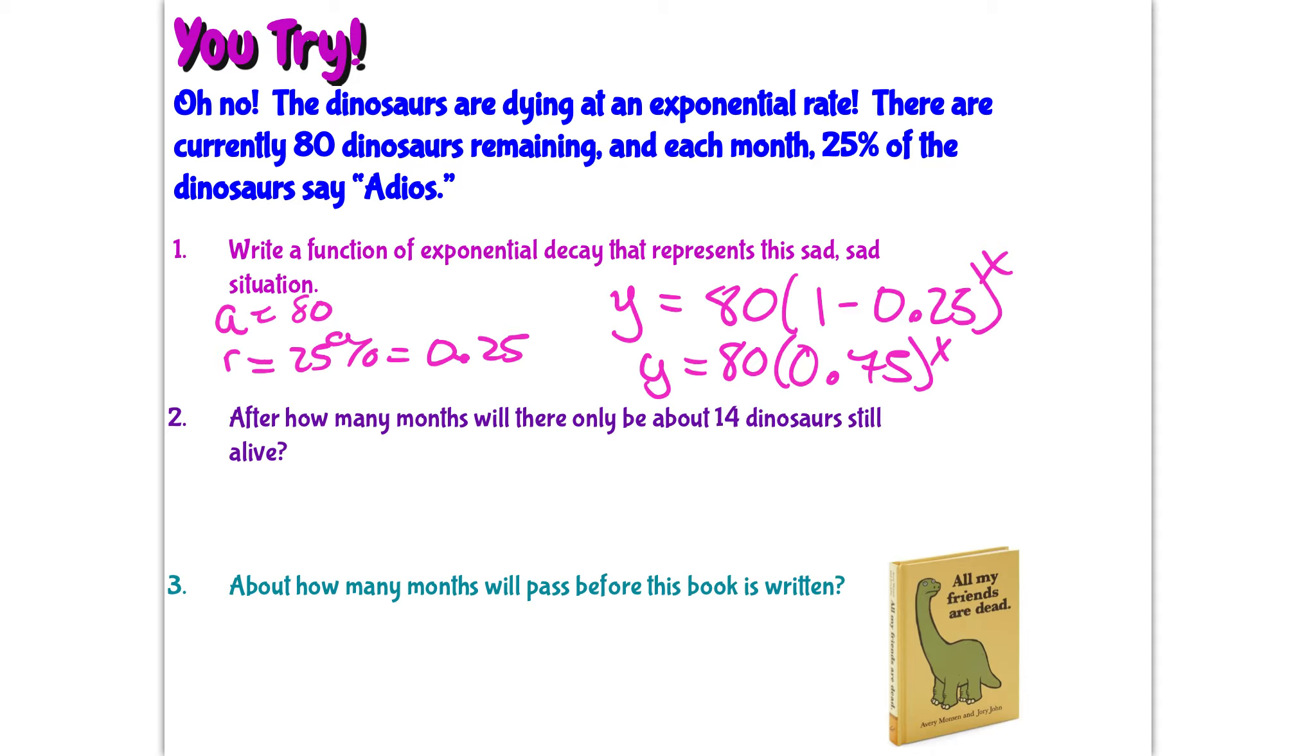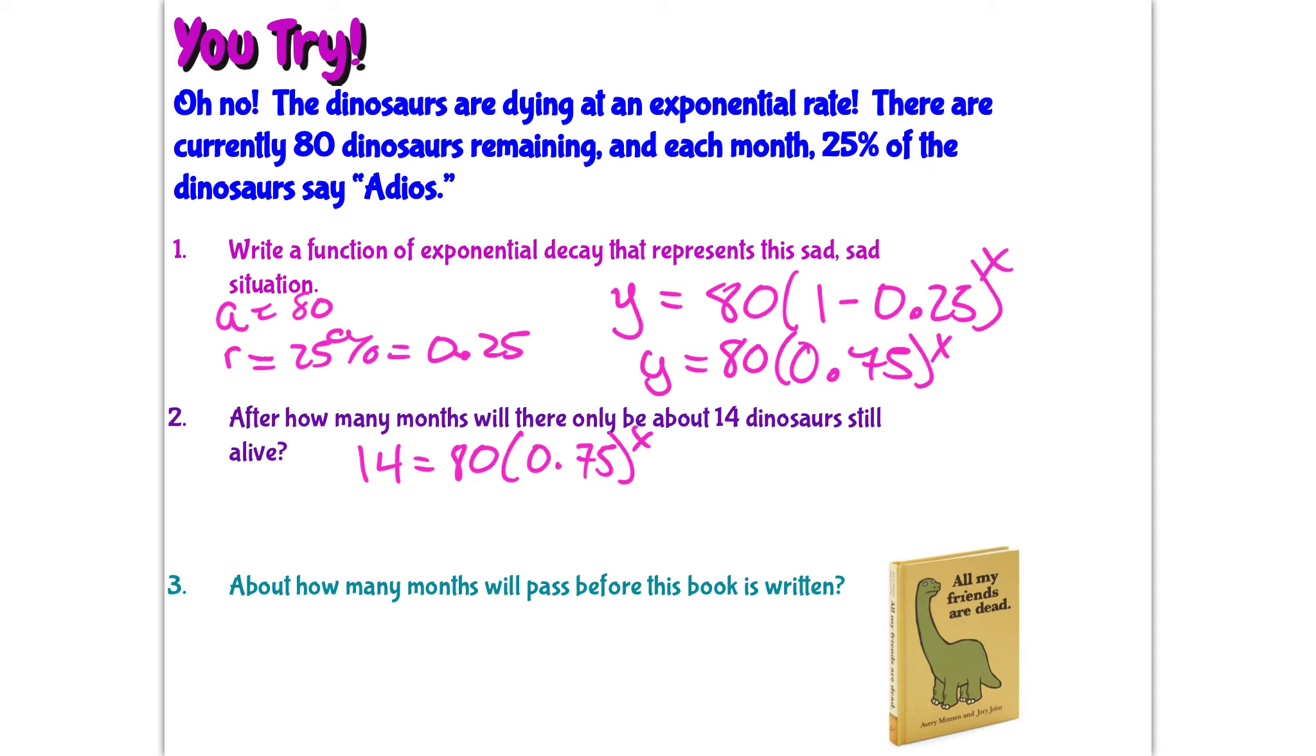After how many months will there only be about 14 dinosaurs still alive? So we need 14 equals 80 times 0.75 to the x power. Now we need to just estimate. Let me try after 5 months. After 5 months, there's still 19 dinosaurs.